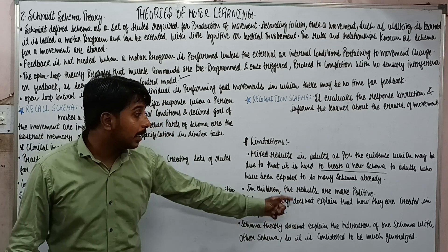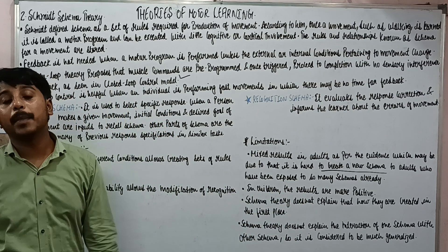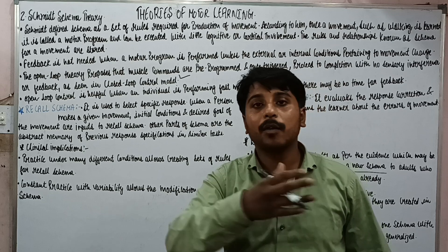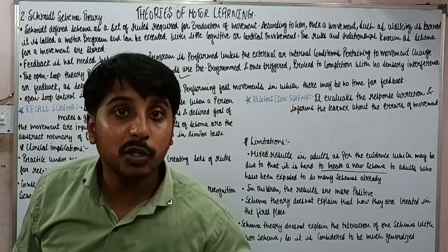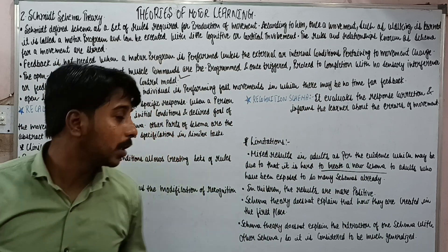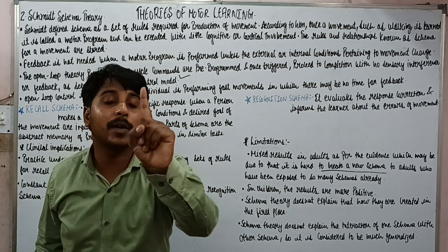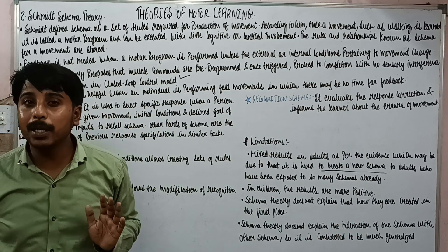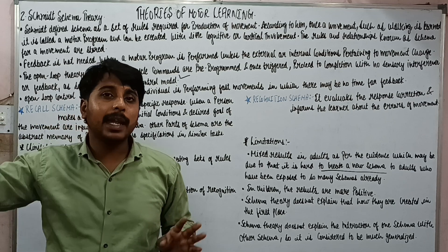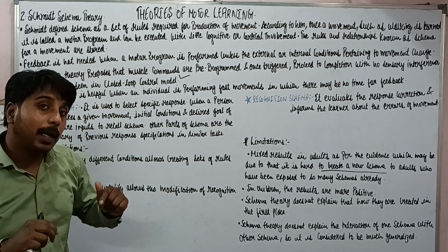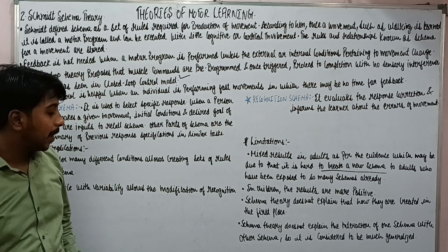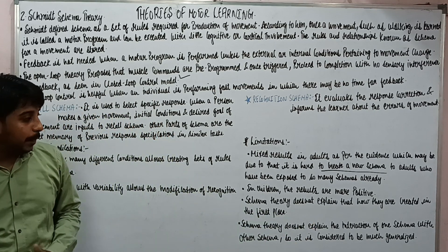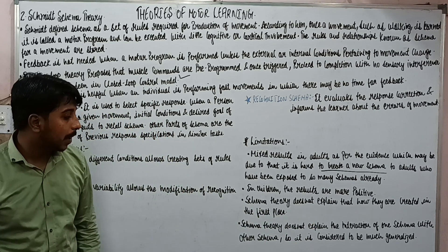Schema theory does not explain how schemas are created for the first time. This is a very important point: once a movement happened, schema was formed, and then we performed the movement again — but how the first movement was produced is unexplained by this theory. Once the first movement is produced, the schema is stored in us and we can do the movement any number of times throughout our life. But how it was produced for the first time is unexplained. Schema theory also does not explain the interaction of one schema with other schemas, so it is considered to be much generalized — how one schema relates to or interacts with another schema, it failed to explain.